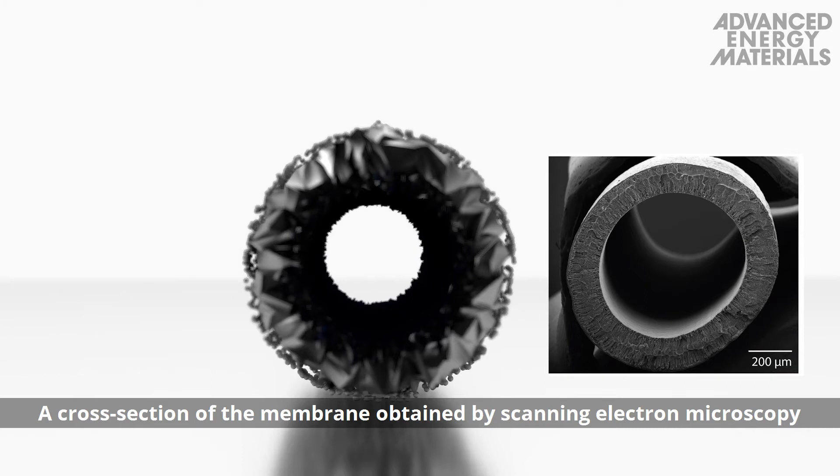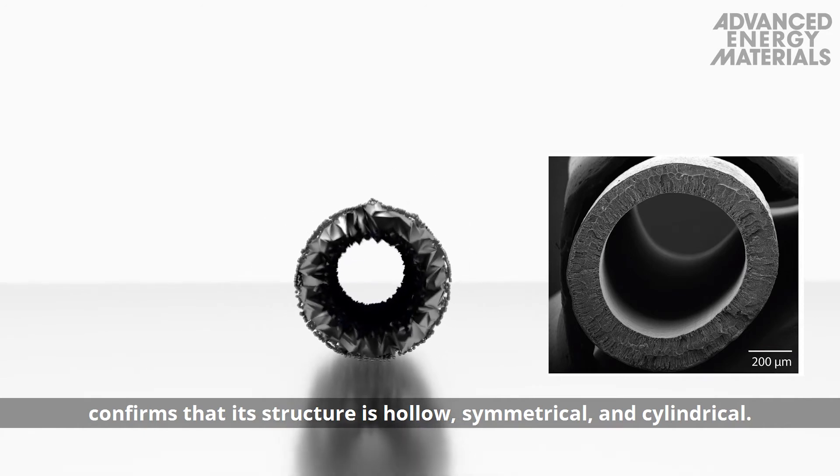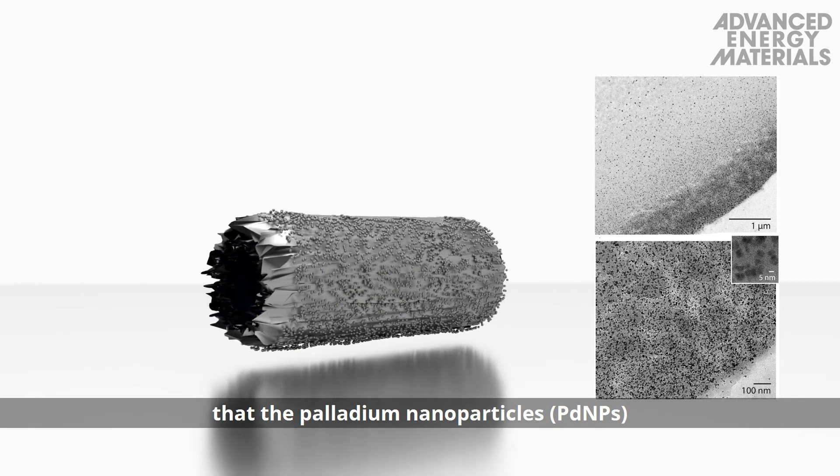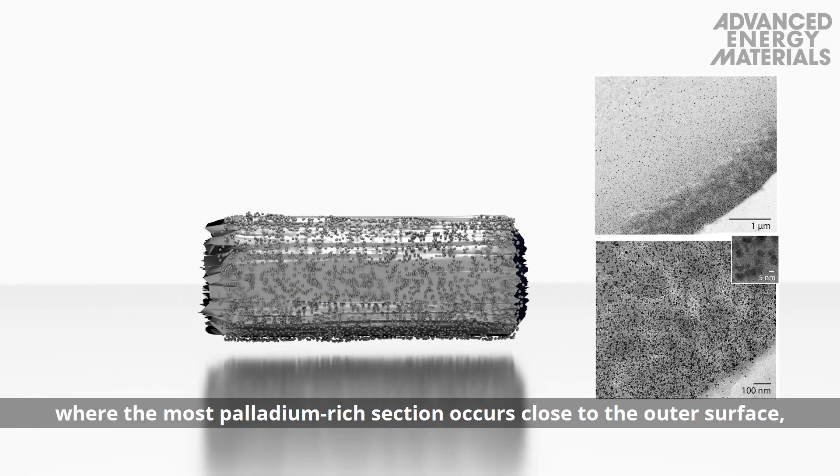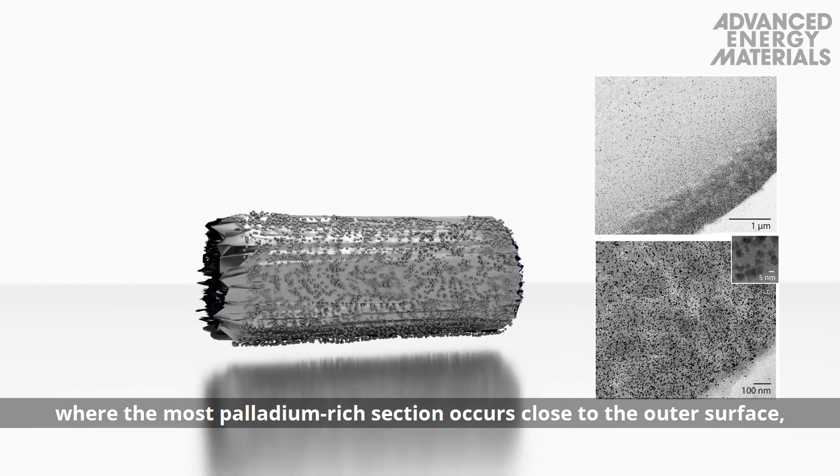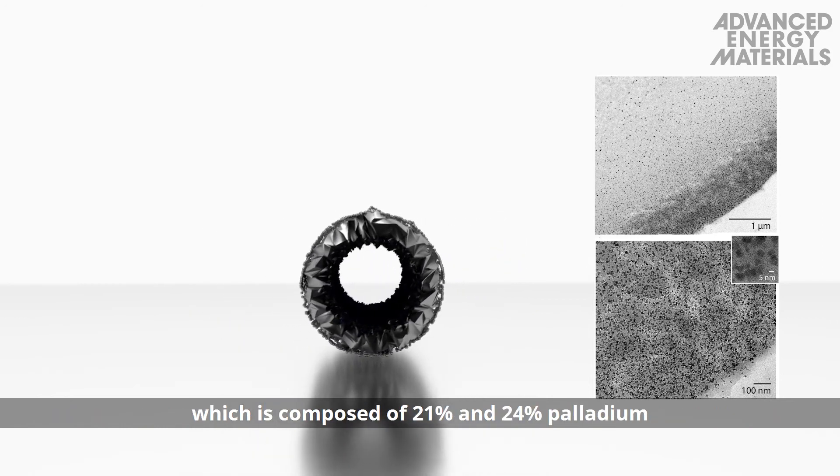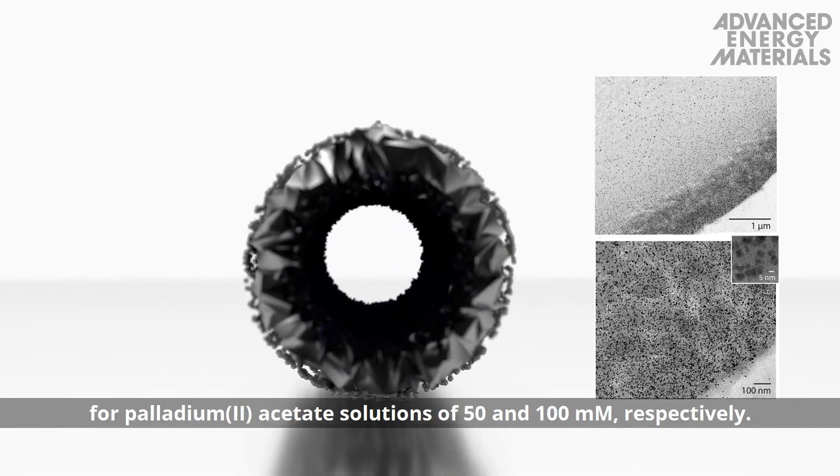A cross-section of the membrane obtained by scanning electron microscopy confirms that the structure is hollow, symmetrical, and cylindrical. Transmission electron microscopy reveals that the palladium nanoparticles are distributed throughout the dense layer, where the most palladium-rich section occurs close to the outer surface, which is composed of 21% and 24% palladium for palladium-2-acetate solutions of 50 and 100 millimolar, respectively.